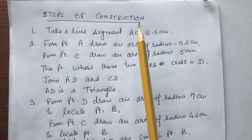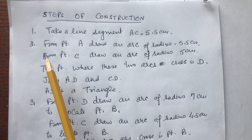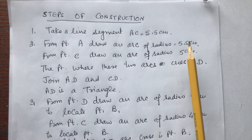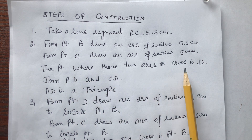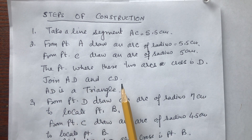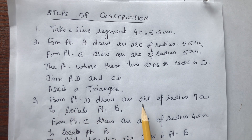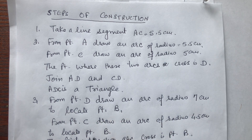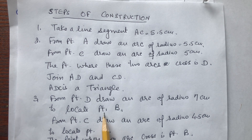Steps of construction: First, take a line segment AC equal to 5.5 centimeters — this was the diagonal taken first. Second, from point A draw an arc of radius 5.5 centimeters, and from point C draw an arc of radius 5 centimeters; the point where these two arcs cross is point D — join AD and CD. Triangle ADC is formed. Third, from point D draw an arc of radius 7 centimeters to locate point B, and from point C draw an arc of radius 4.5 centimeters to locate point B.